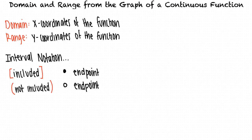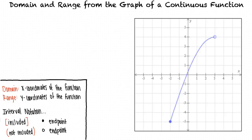Let's take a look at an example problem to see how we'll use interval notation to denote domain and range. We want to find the domain and range of the function shown. Let's first determine the domain. Since domain deals with x-values, which corresponds to the x-axis, we examine the function from left to right. The leftmost x-coordinate is negative 2, and that endpoint is a filled-in circle, so we'll use a bracket to indicate the smallest value in our domain.